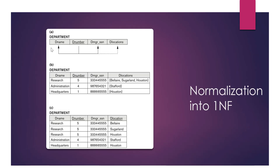Let's look at an example. We have a department table with department name, department number, department manager social security number, and department location. If we look at an instance of this relation, we see that the research department has three different locations — this is a multivalued attribute. To make it in the first normal form, we decompose this multivalued attribute into three different tuples. Each tuple will have a single atomic value in the department location. Now this relation is in the first normal form. We still have problems with data redundancy, but this is the first step — ensuring all tuple values are atomic.